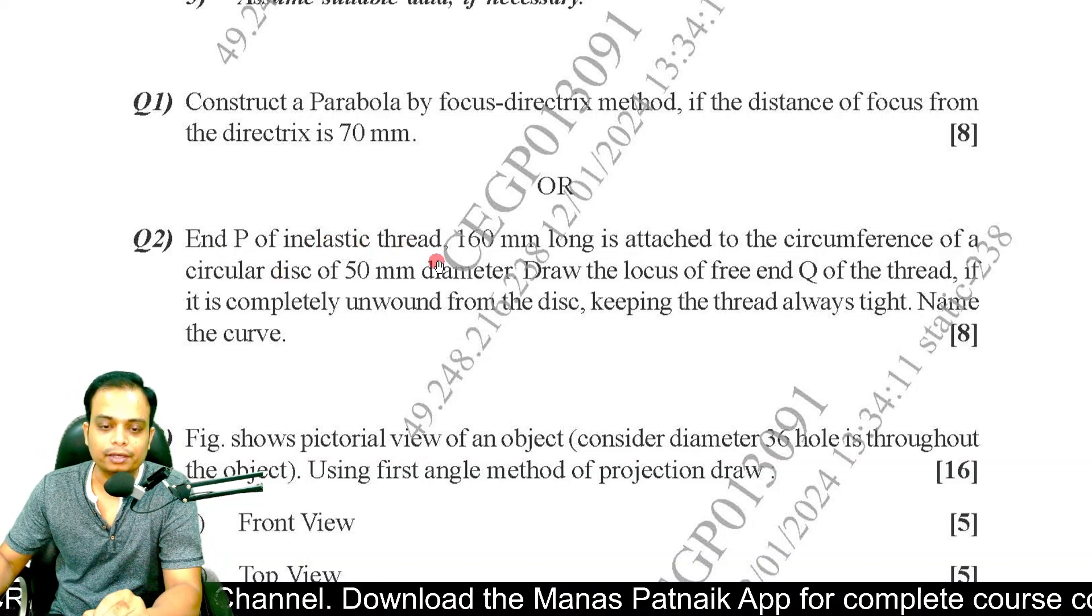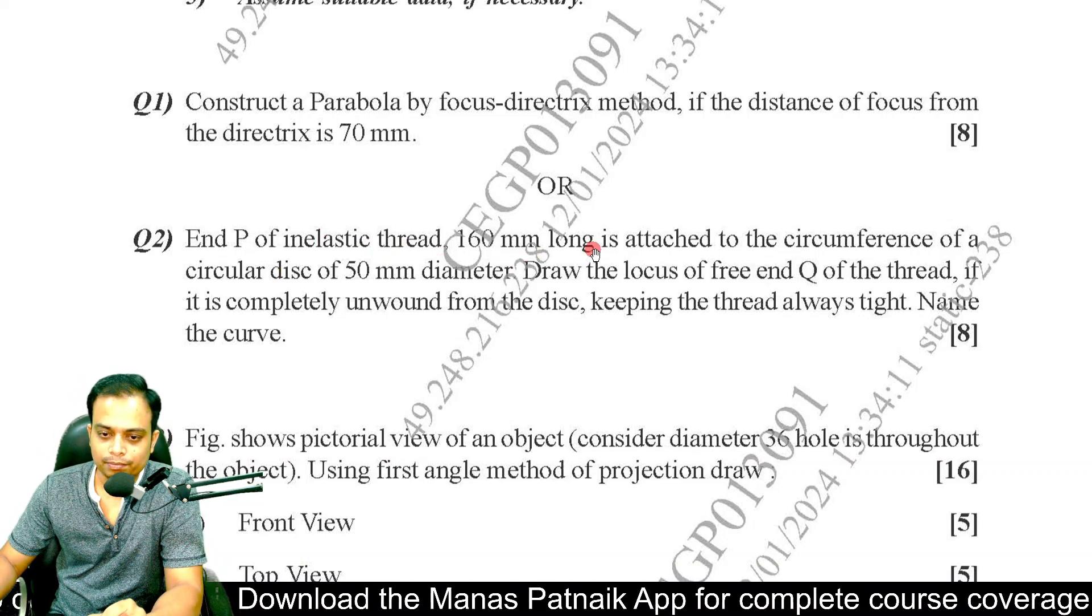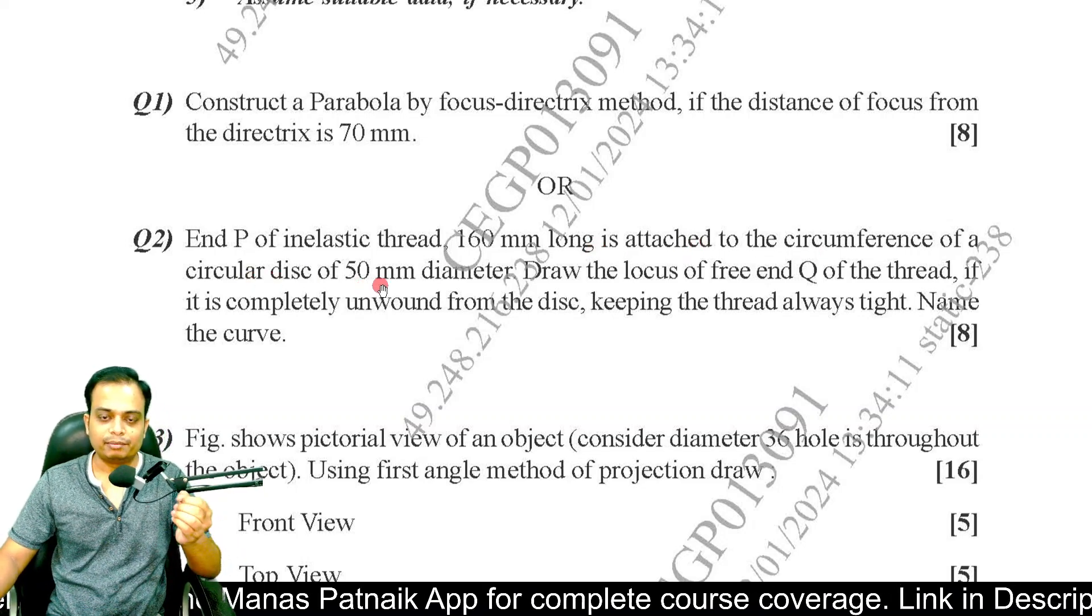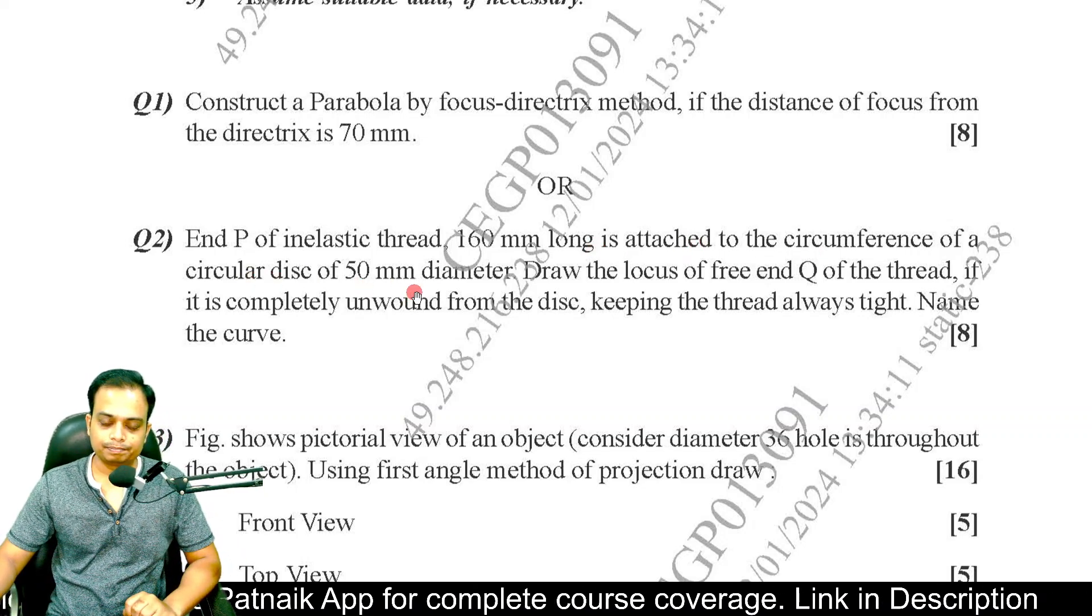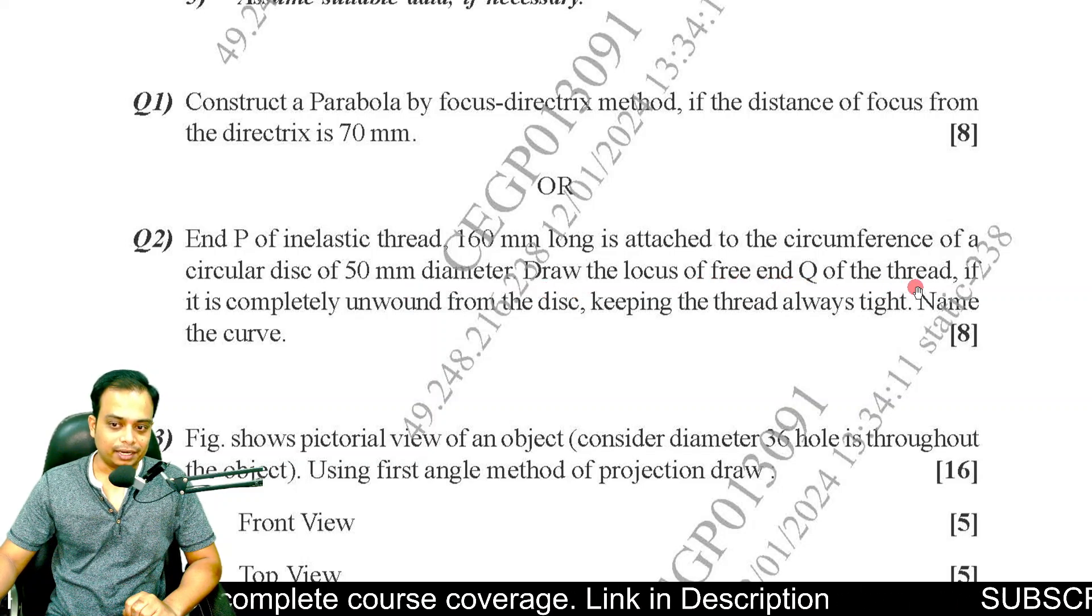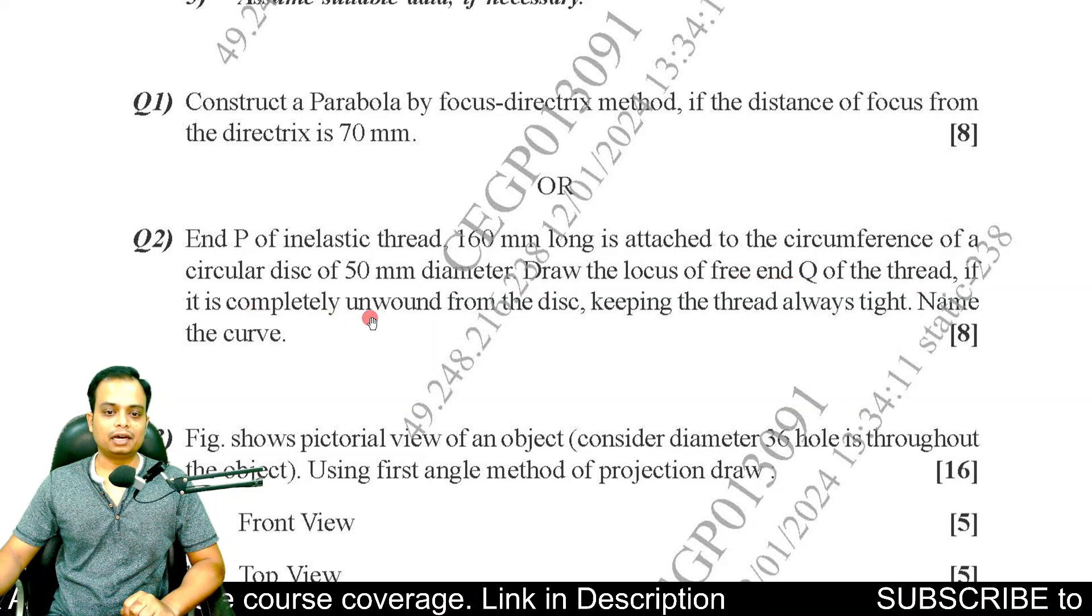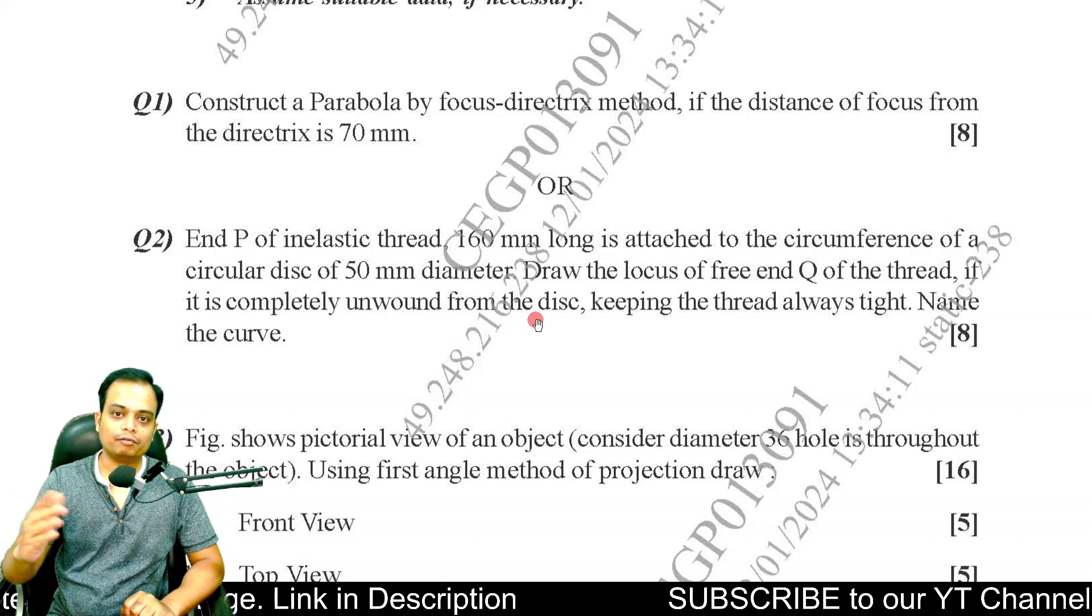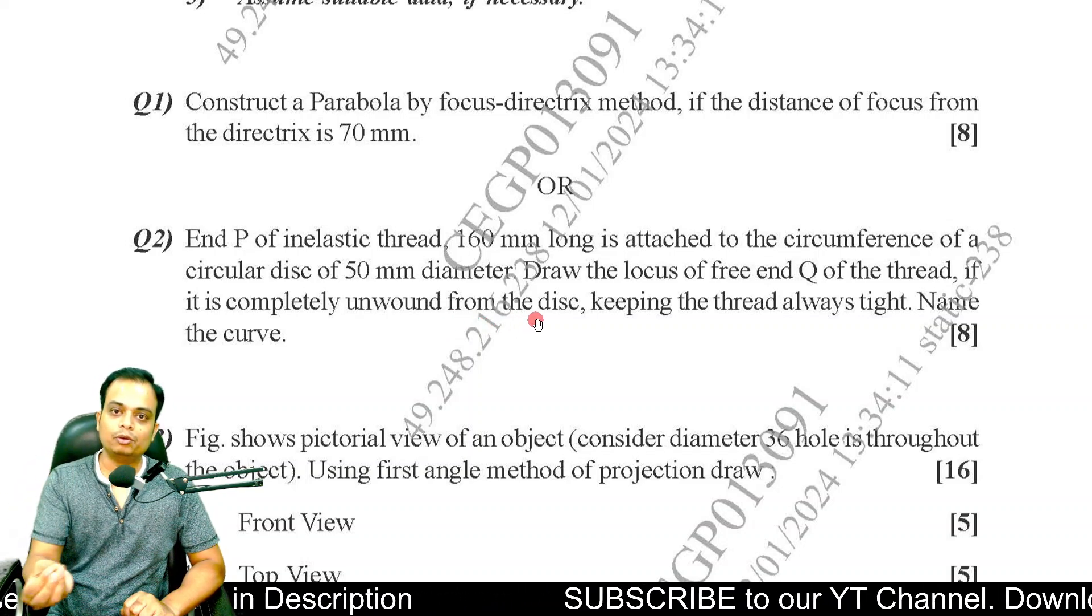End P of an inelastic string 160 mm long is attached to the circumference of a circular disc of 50 mm diameter. Draw the locus of free end Q of the thread if it is completely unwound from the disc.